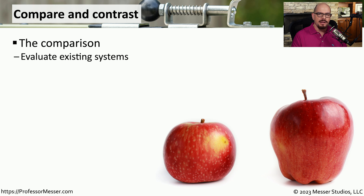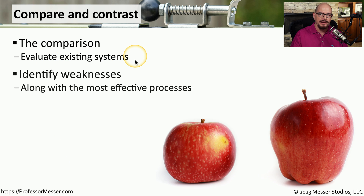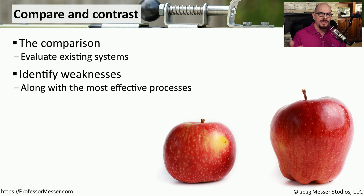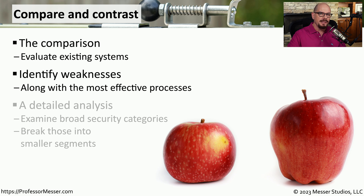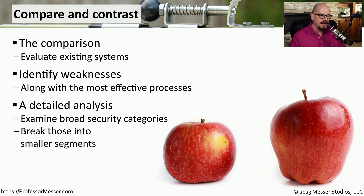The analysis portion of the gap analysis will begin with a comparison of the existing systems running in your environment to identify any weaknesses those systems might have. You can also compare these weaknesses with the most effective processes for understanding how to compensate for them. Ultimately, you'll create a detailed analysis where you look at very broad categories of security and then break those broad categories down into individual smaller segments.